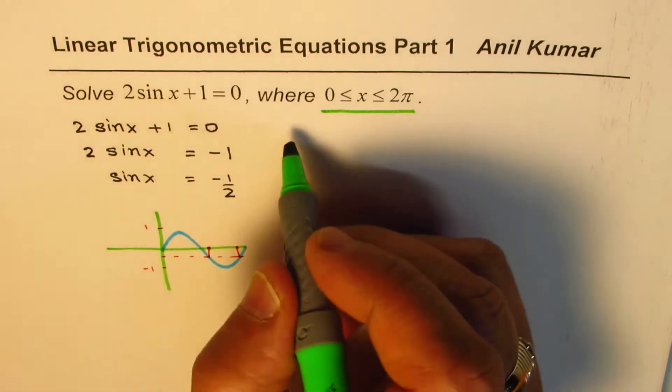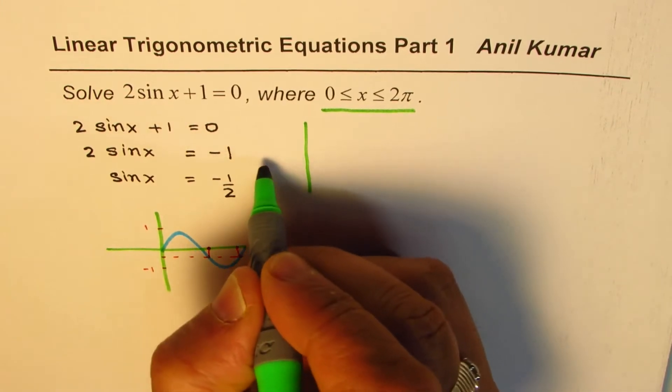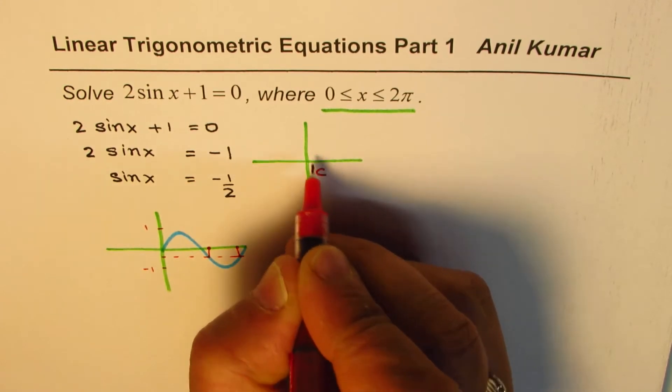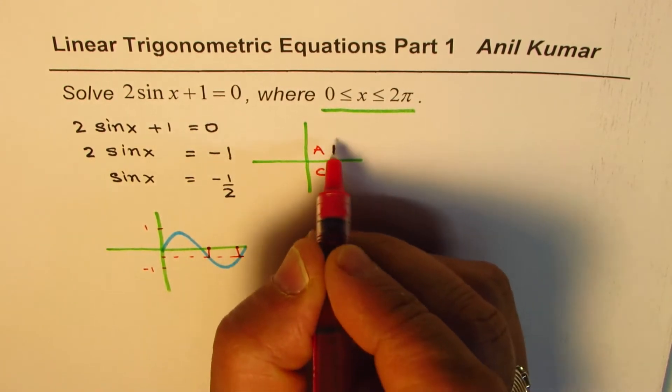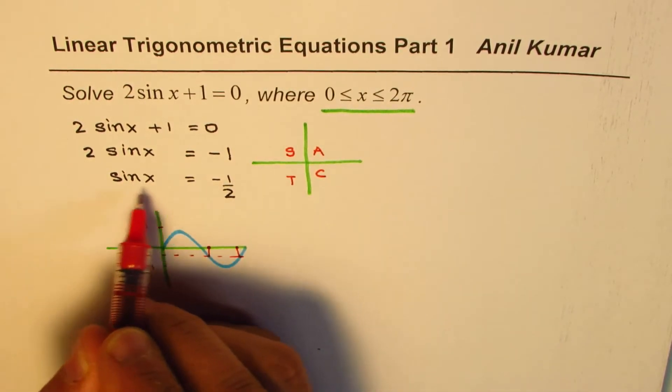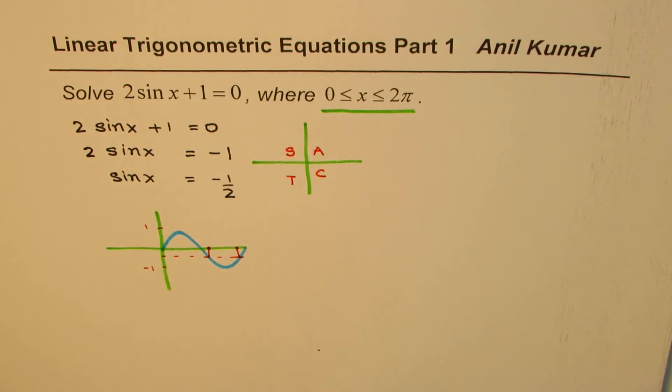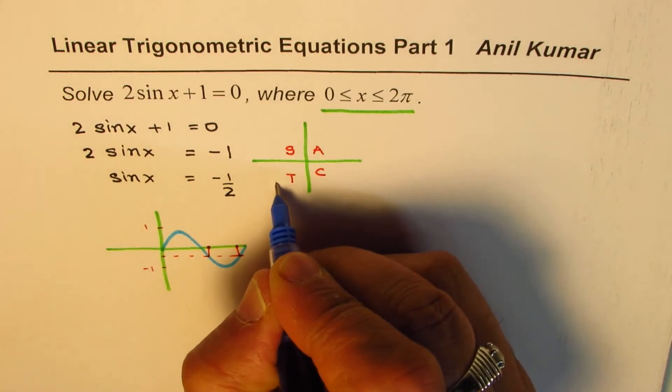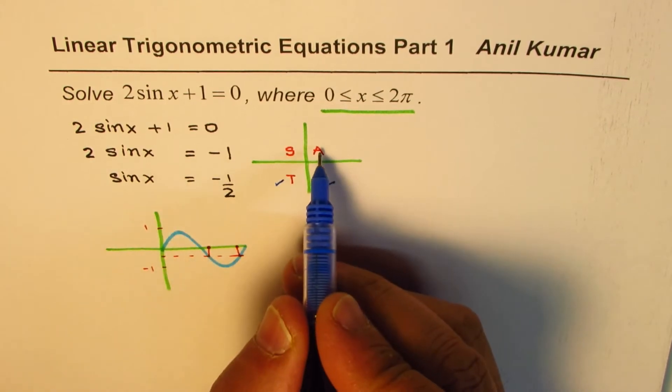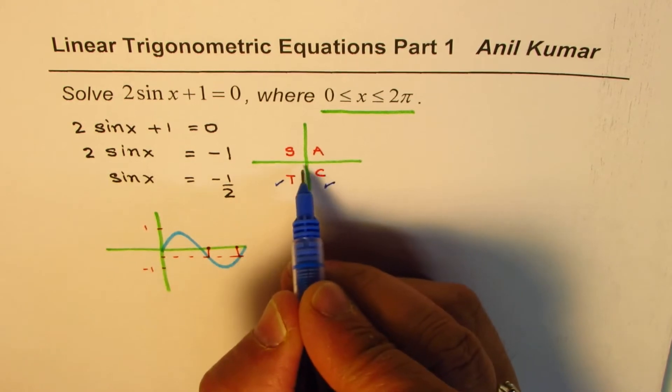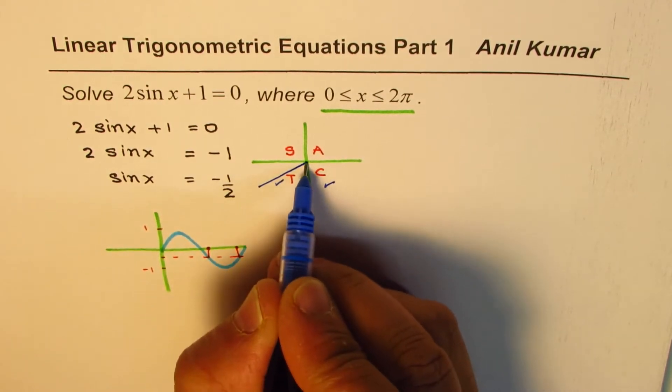About the quadrants we can also look at it in this fashion, applying the CAST rule. Cosine is positive in quadrant 4, all are positive in quadrant 1, sine in quadrant 2, and tangent in quadrant 3. We are looking for sine to be negative. So that should be in quadrant 3 and in quadrant 4. Sine is positive in quadrant 1 and 2. So we are expecting solution to be in these two quadrants.